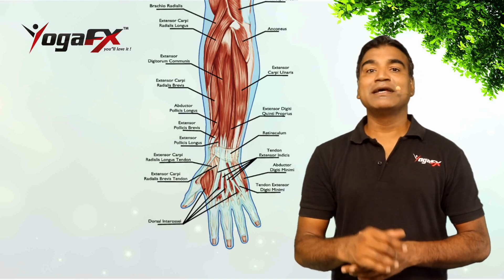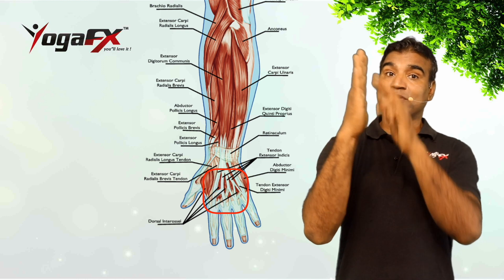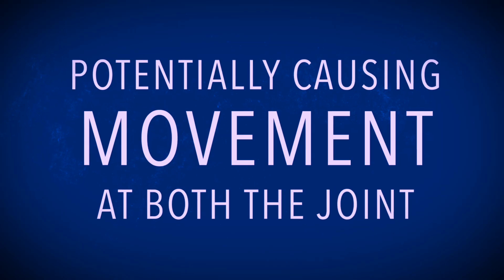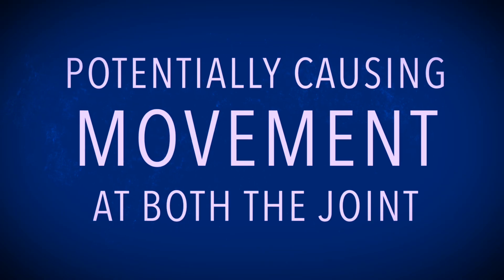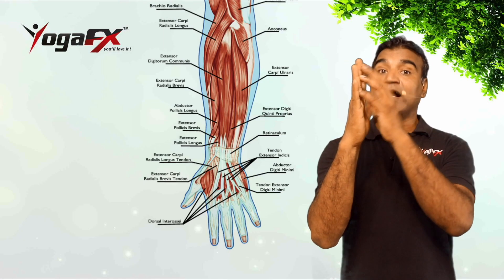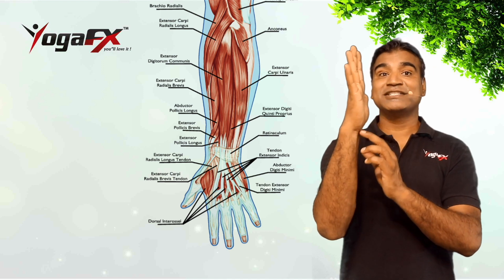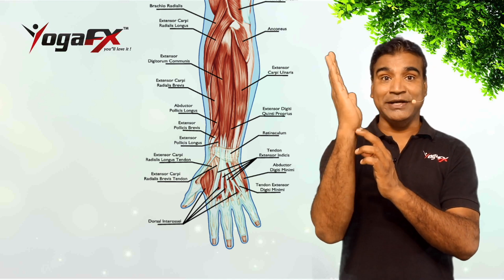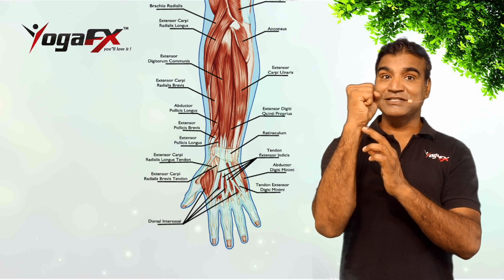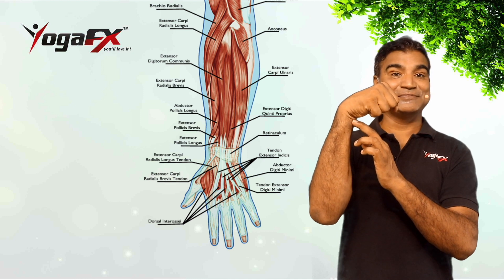For example, the muscles that flex the fingers not only cross the finger joints but also cross the wrist joint, potentially causing movement at both joints. However, because you have other muscles acting synergistically to stabilize the wrist joint, you are able to flex the fingers into a fist without flexing the wrist at the same time.